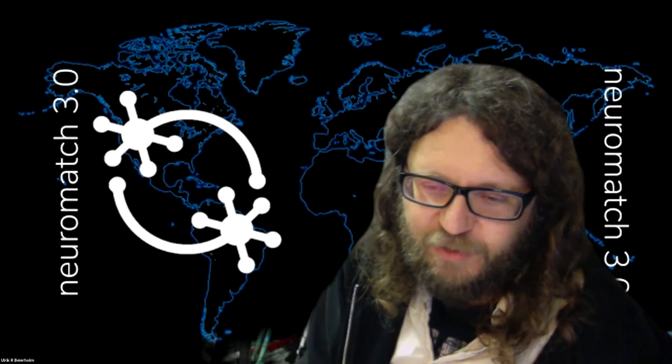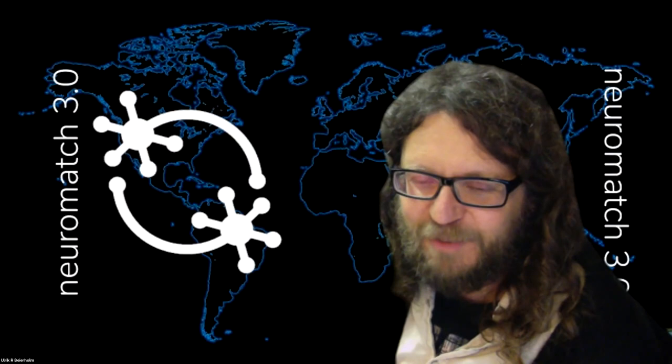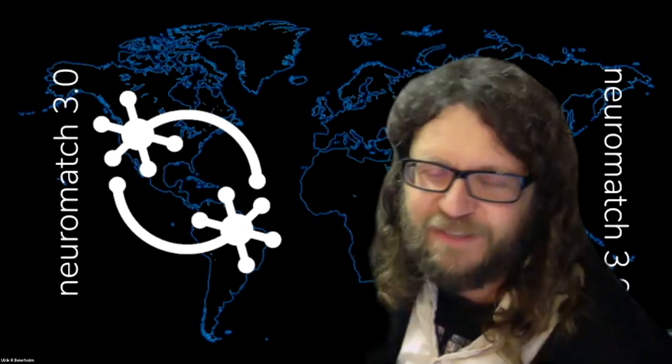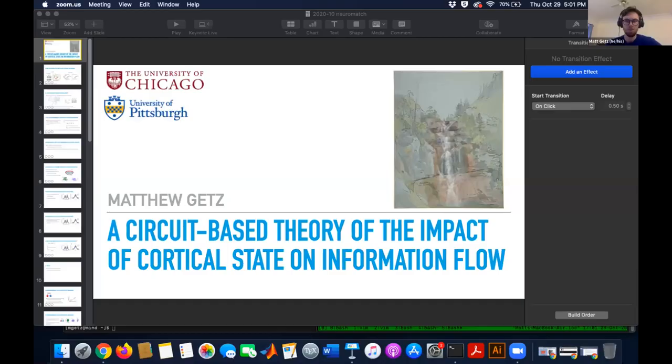This is Matt Goetz, a grad student at University of Chicago and University of Pittsburgh. Somehow at both places at the same time must be confusing. He is going to talk about a circuit-based theory of the impact of cortical state on information flow. So if you can get your slides ready, Matt.